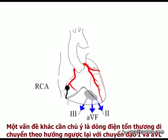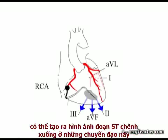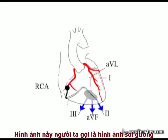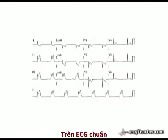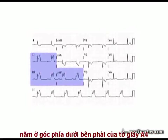Note also that the injury current is moving directly away from leads 1 and AVL. As we'll see shortly, on the ECG this can produce ST depression in these leads — so-called reciprocal change. On a standard ECG, the recordings from leads 2, 3, and AVF are grouped together in the bottom right-hand corner of the A4 readout.